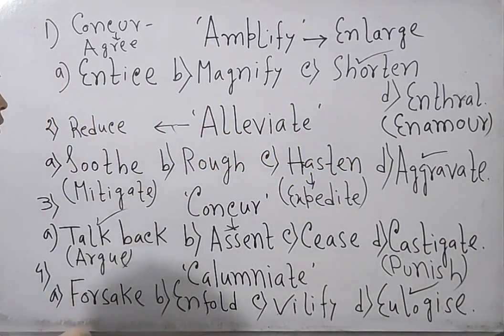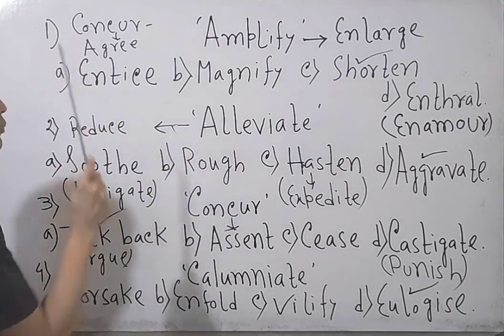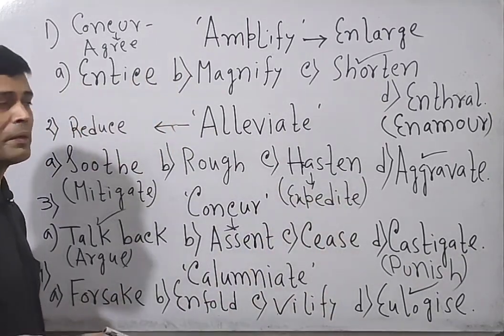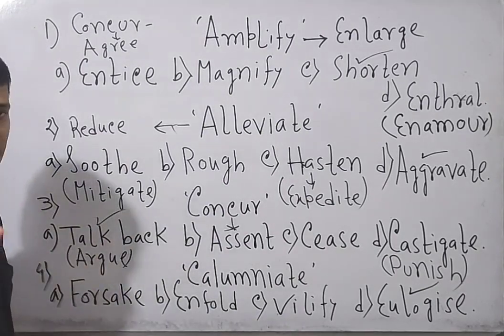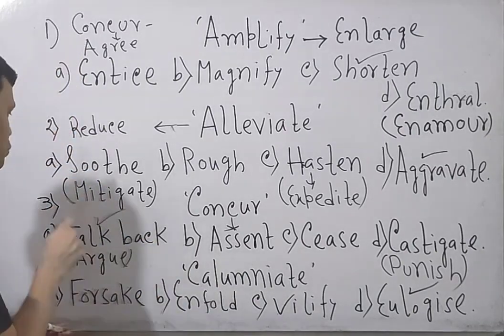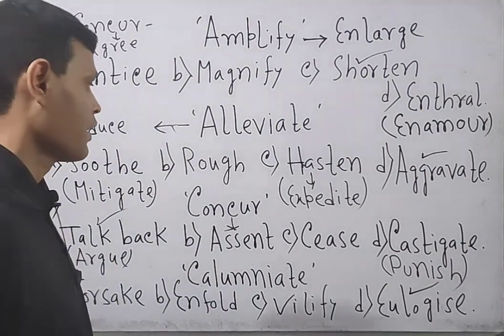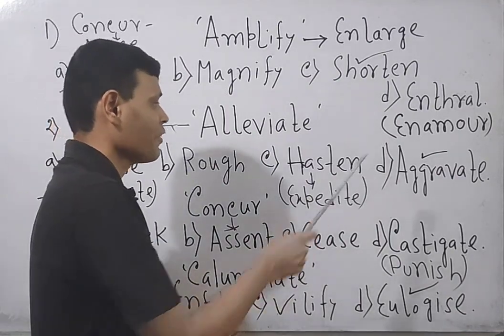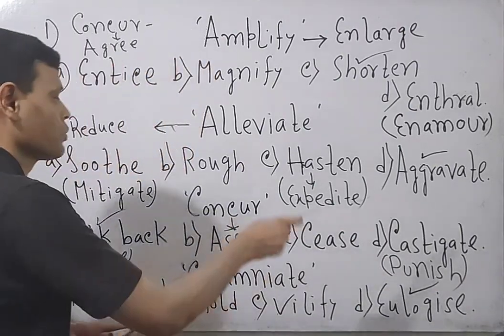Now look through the overall class. Amplify suggests enlarge, the opposite is shorten. Entice means make someone greedy. Enthrall, fascinate, enamor all are equally mean, even you can say spellbound. Alleviate means reduce or mitigate or bring down or cut down, even you can say soothe. Rough means not at all smooth. Hasten means quicken the process, expedite the process. But here aggravate means increase rapidly or enhance rapidly, so here is the opposite word.